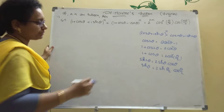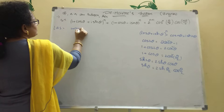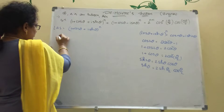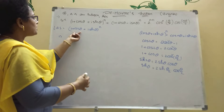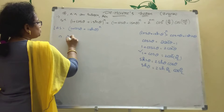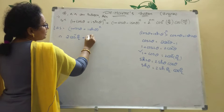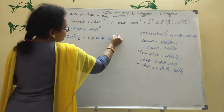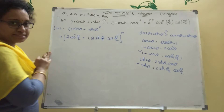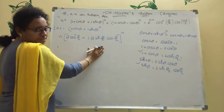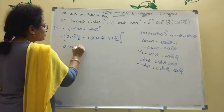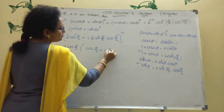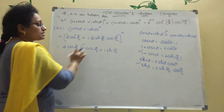Taking LHS: (1 + cosθ + i·sinθ)^n. We take the first part. Now 1 + cosθ = 2cos²(θ/2), and i·sinθ = i·2·sin(θ/2)·cos(θ/2). Taking 2cos(θ/2) common, the inner side becomes cos(θ/2) + i·sin(θ/2), whole power n.